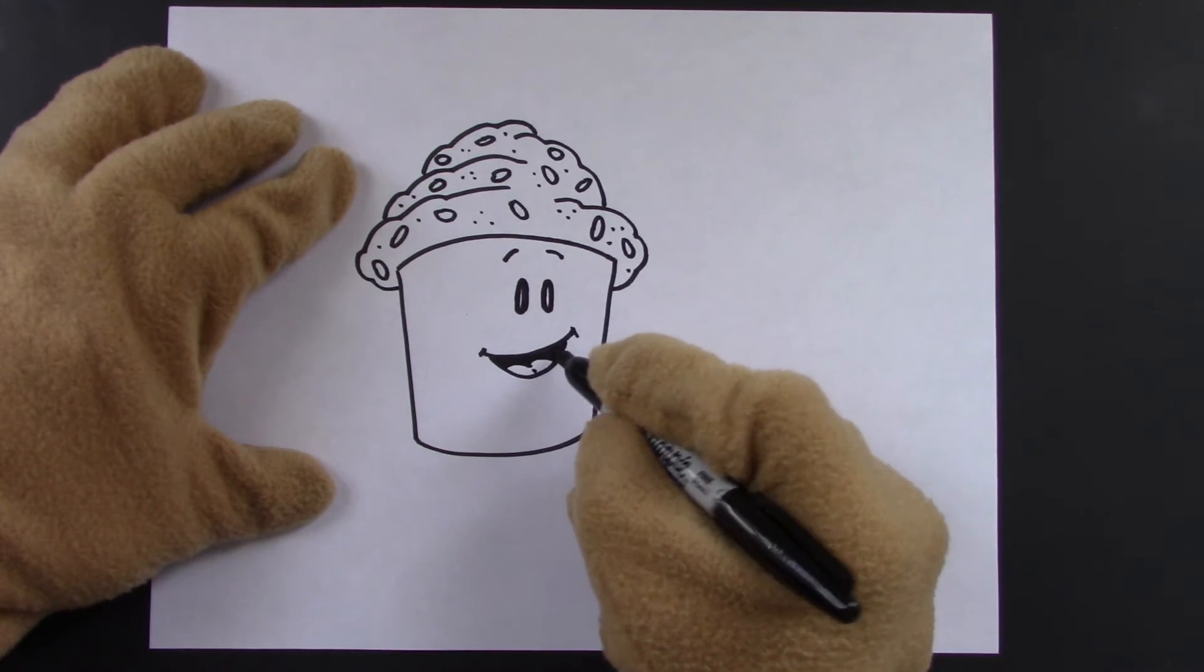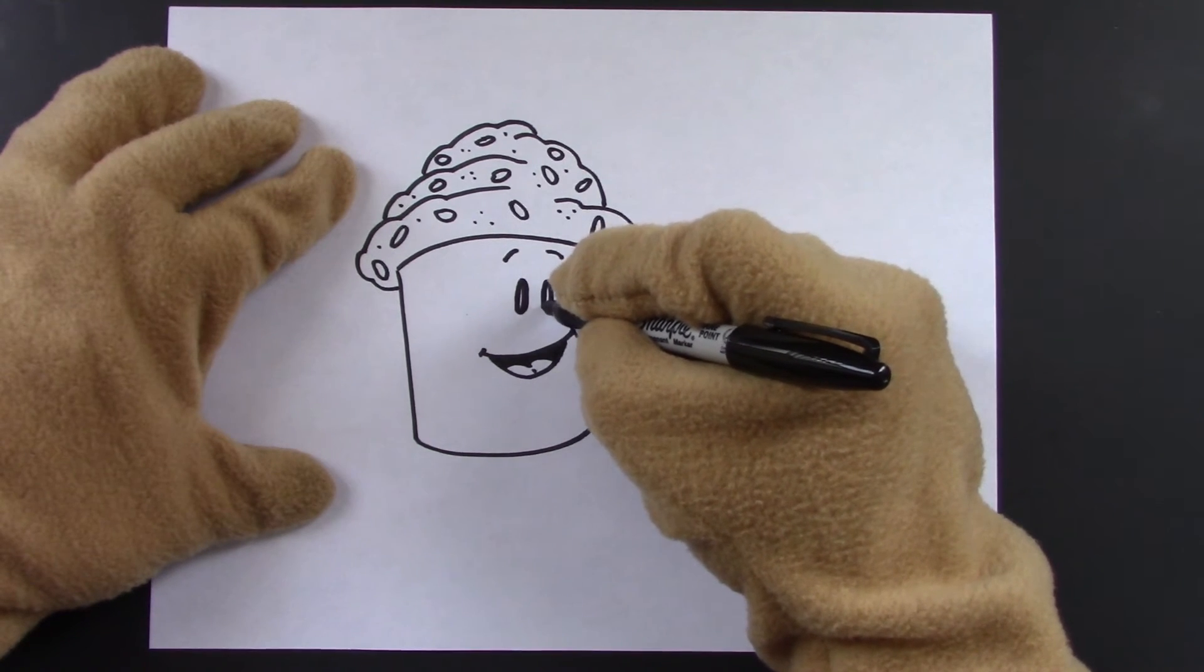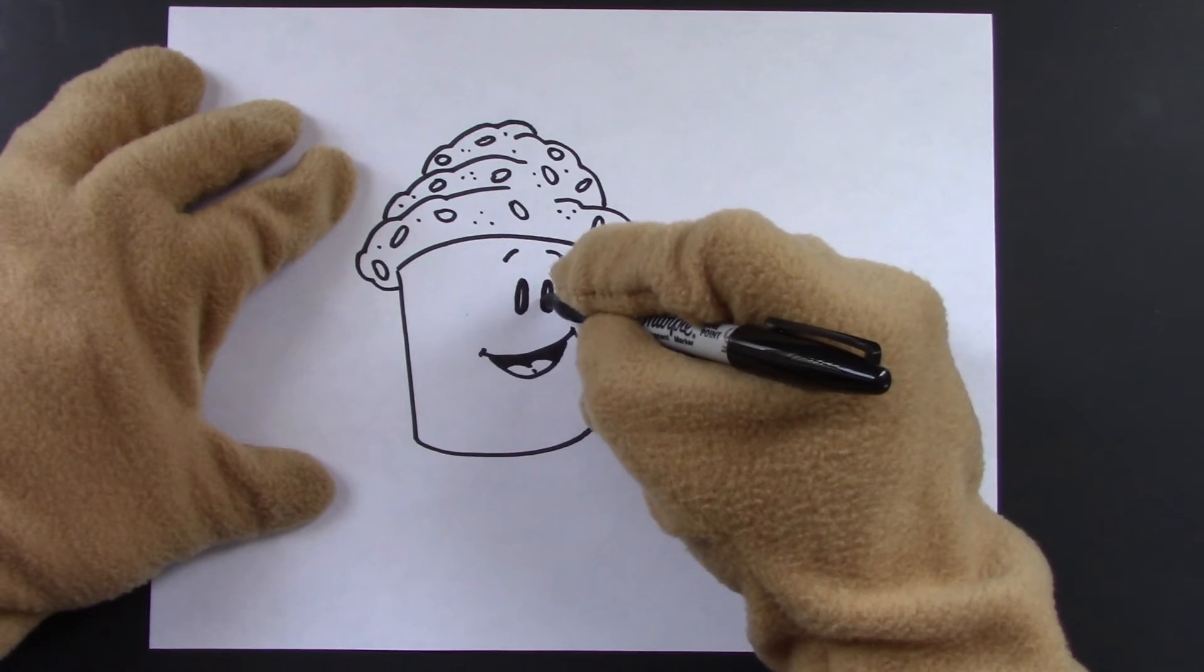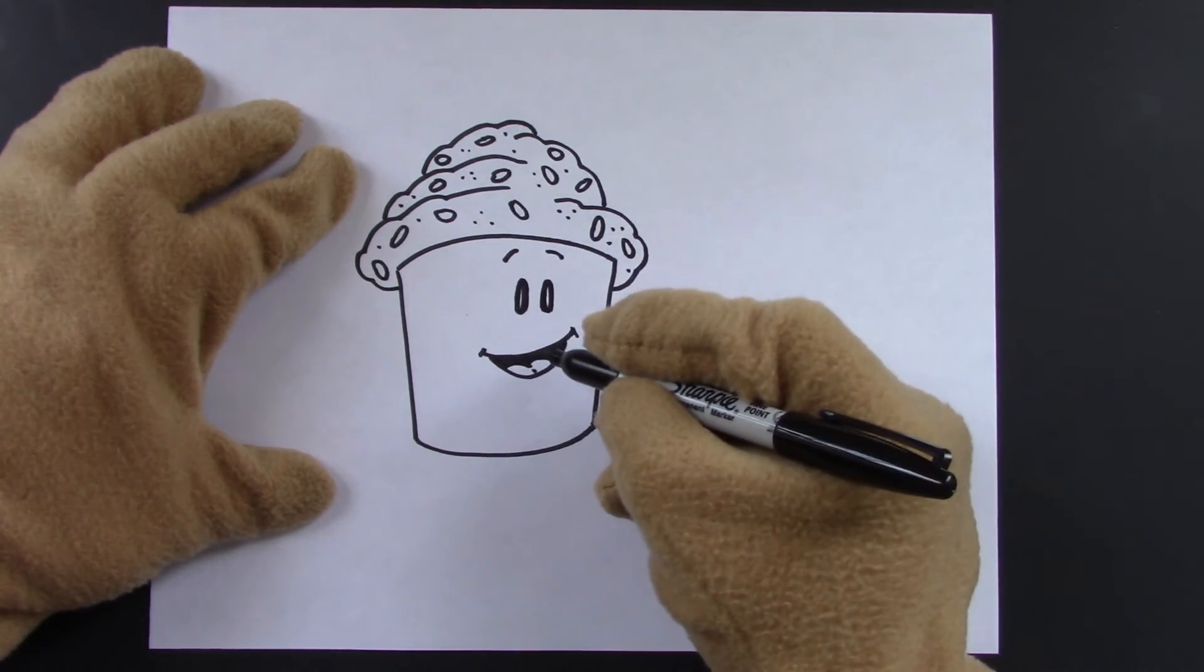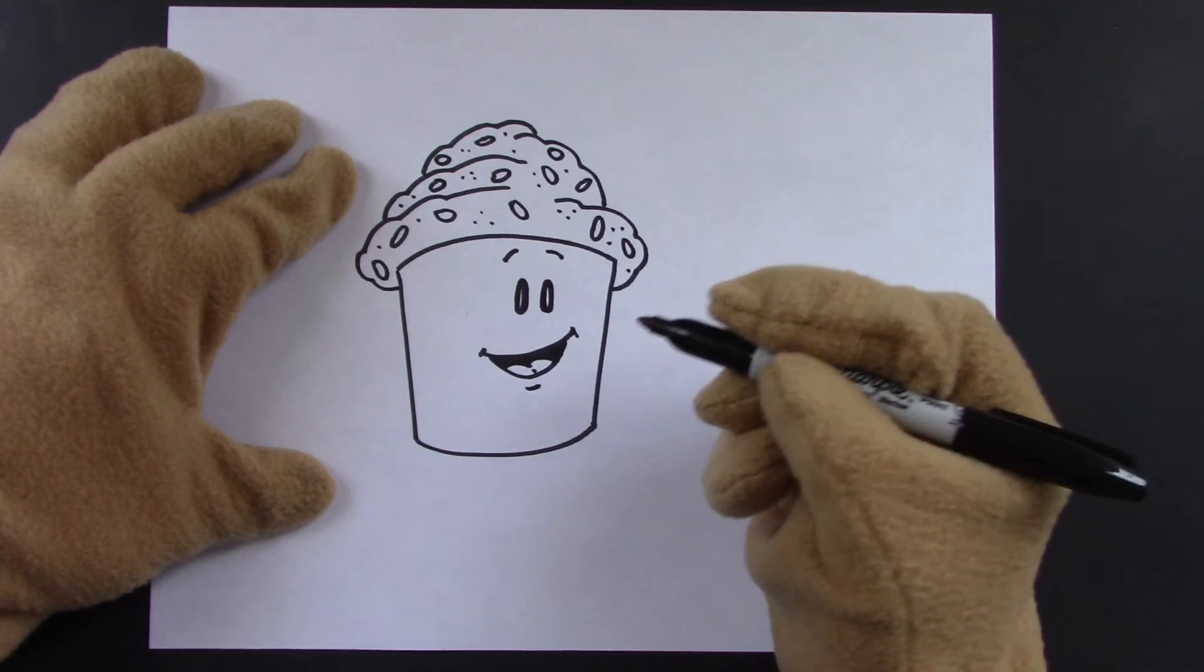There we go. Looking good. And if you notice something that's not quite right, you can go back and add some shapes, some lines, a bottom lip.